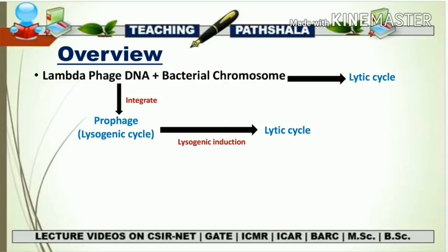This is the overview of what we have studied so far. If there is lambda phage DNA plus a bacterial chromosome, there will be either a lytic cycle — causing destruction of the bacterial cell — or integration of DNA into the bacterial chromosome forming a prophage, which induces a lysogenic cycle. Any unfavorable condition causing the lysogenic cycle to switch to a lytic cycle is called lysogenic induction.